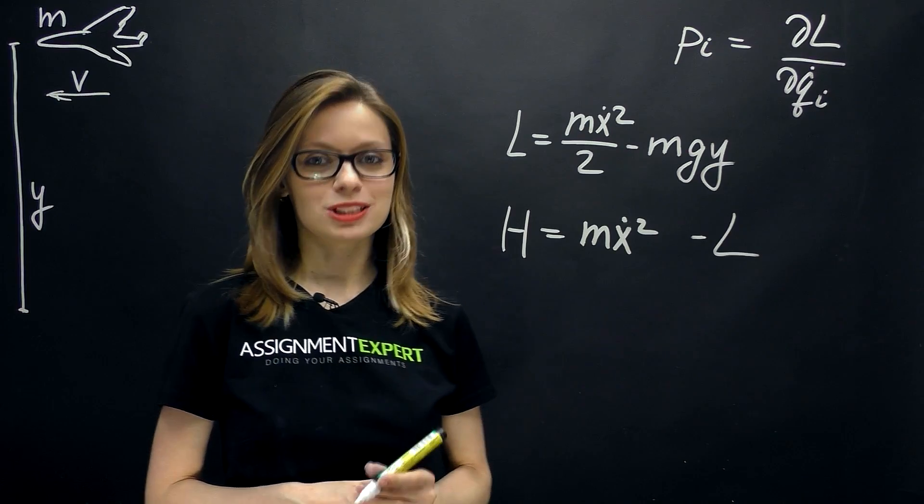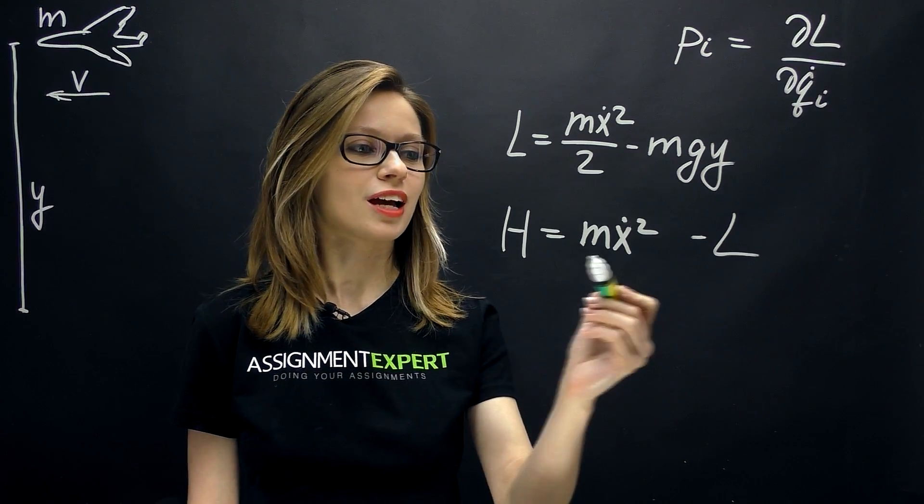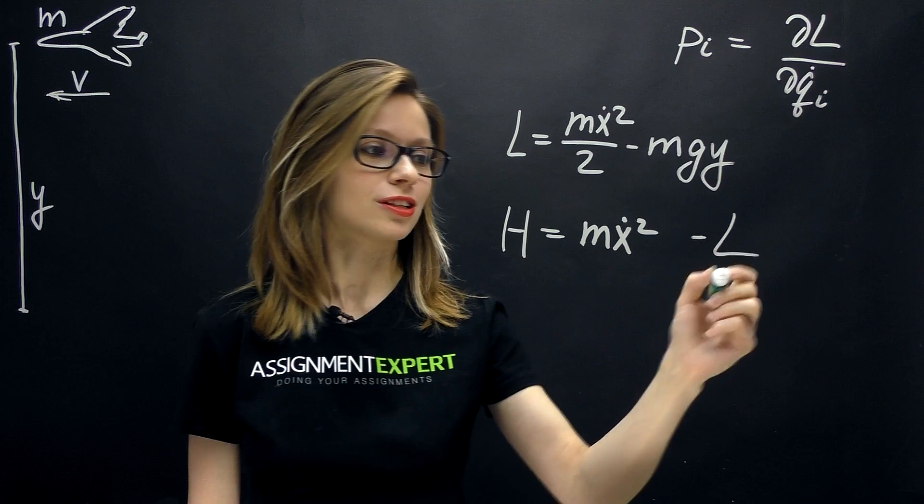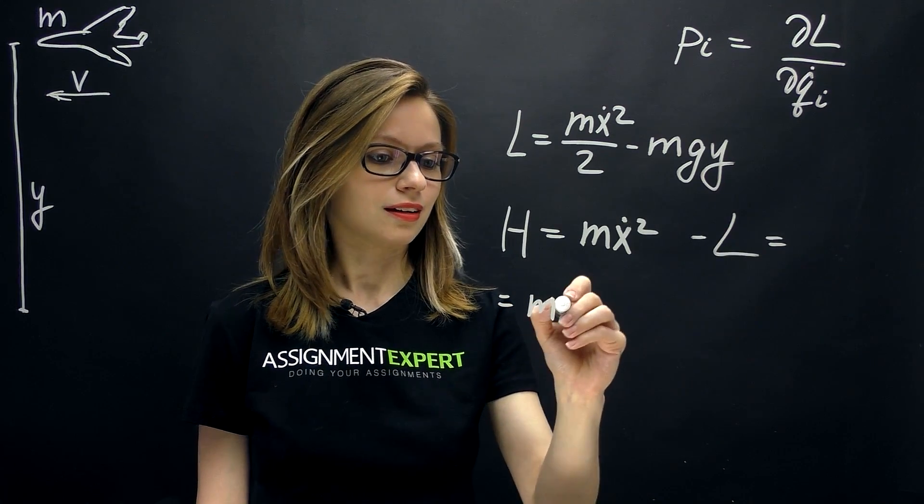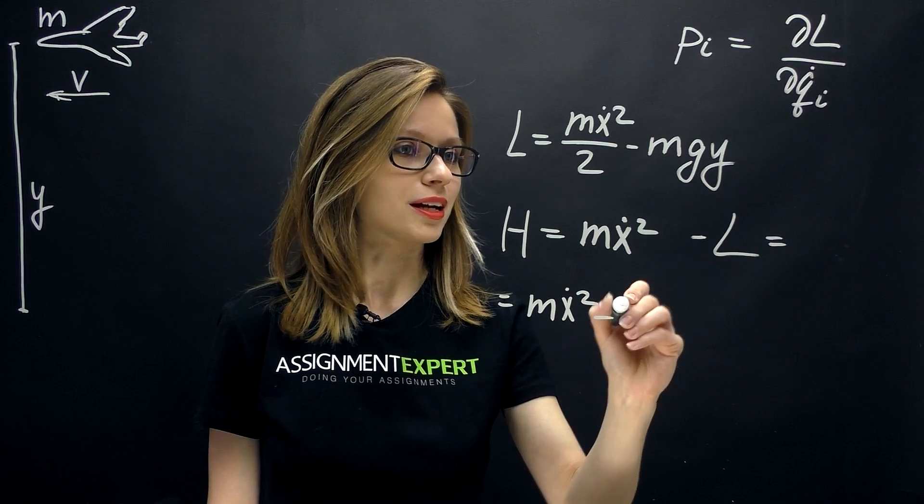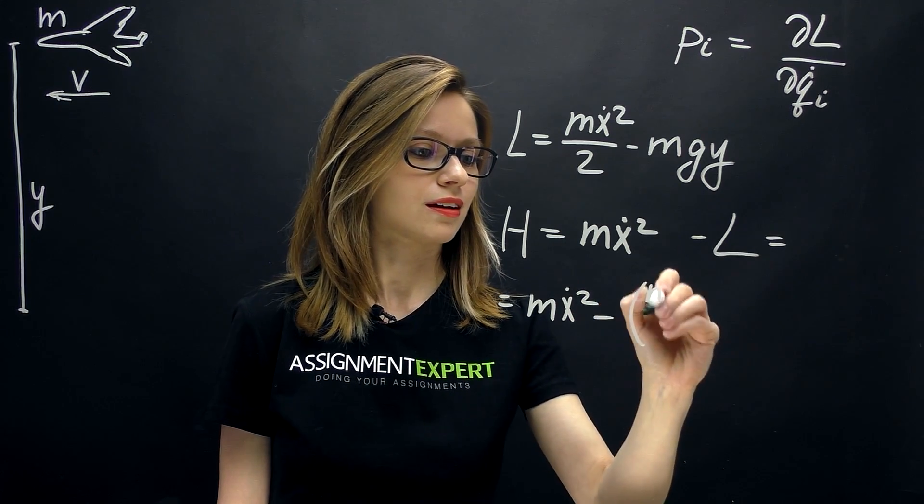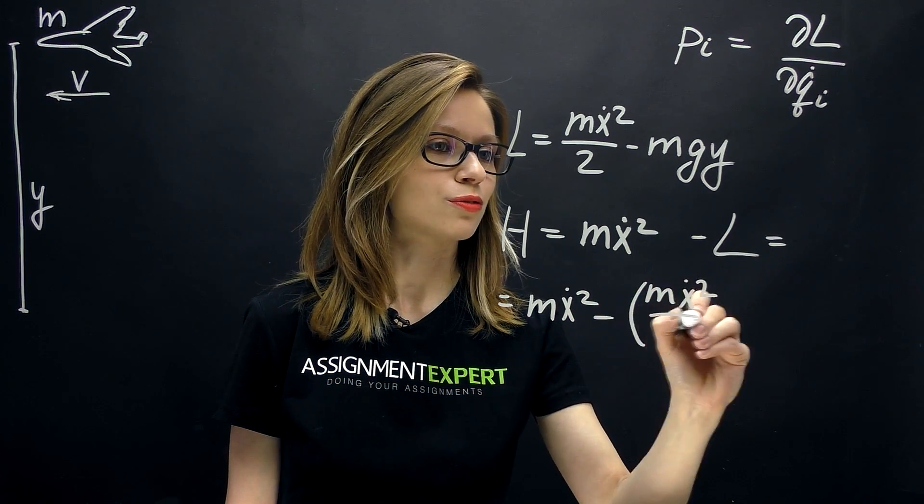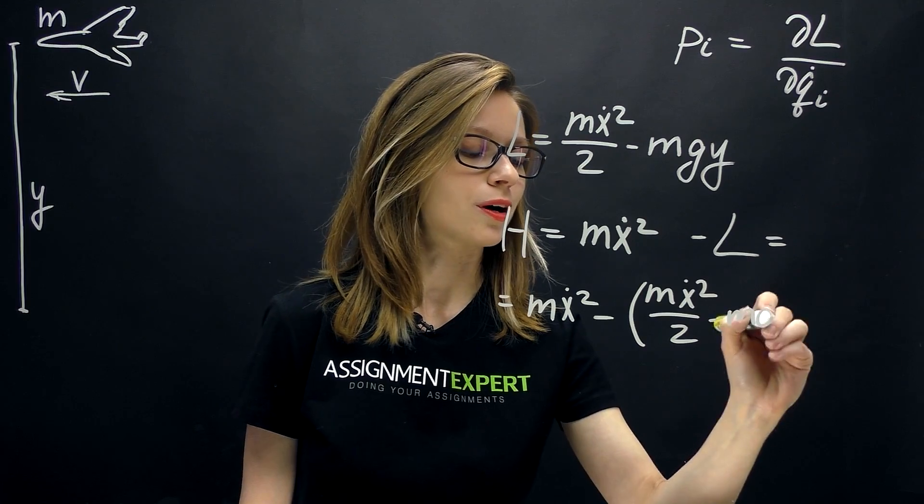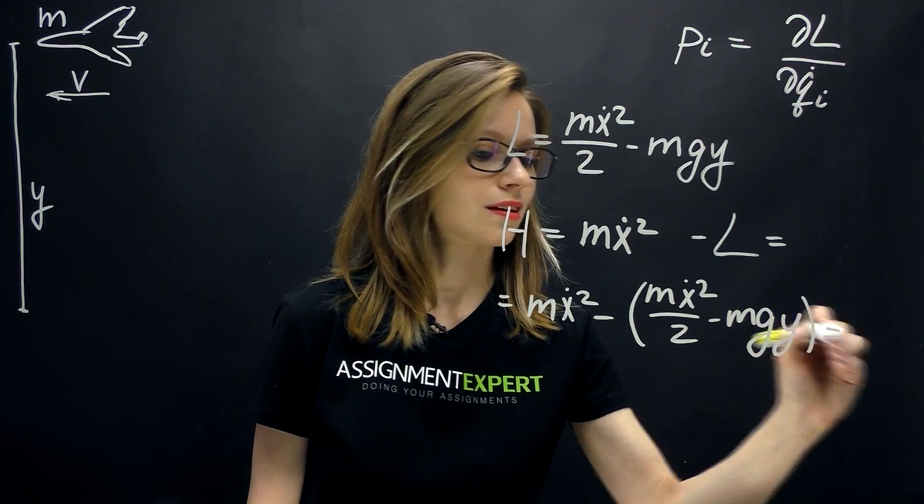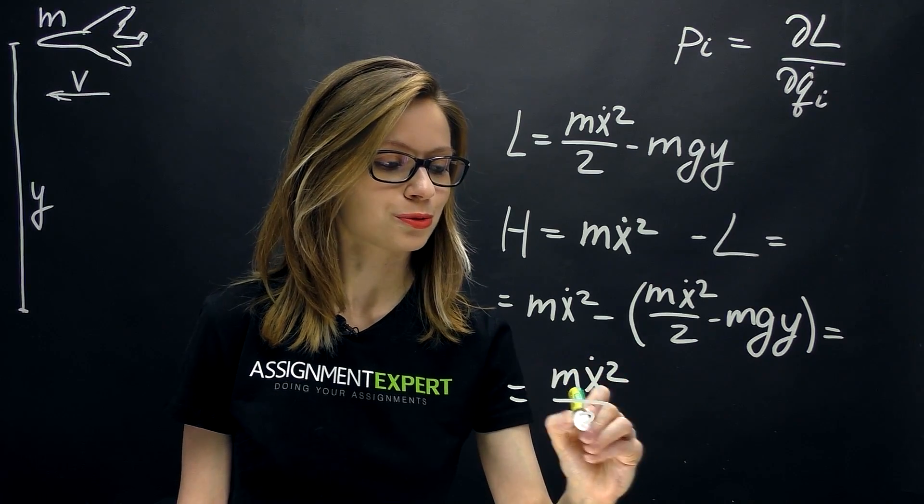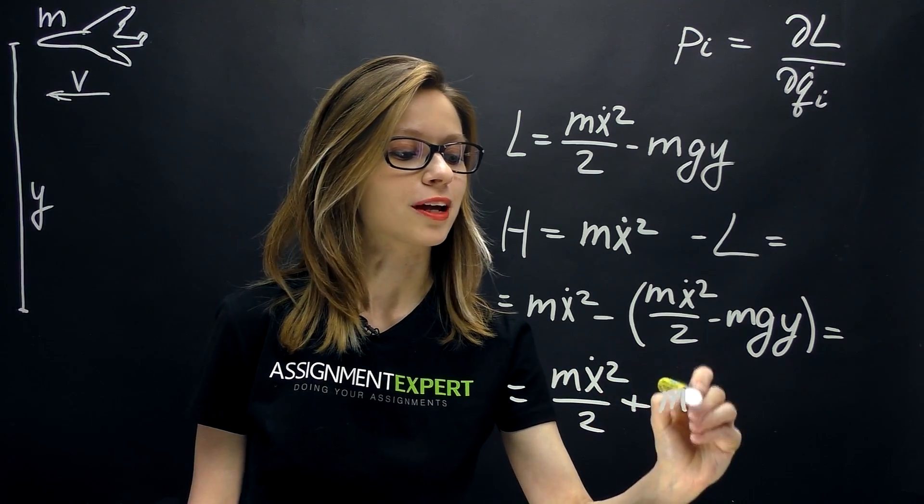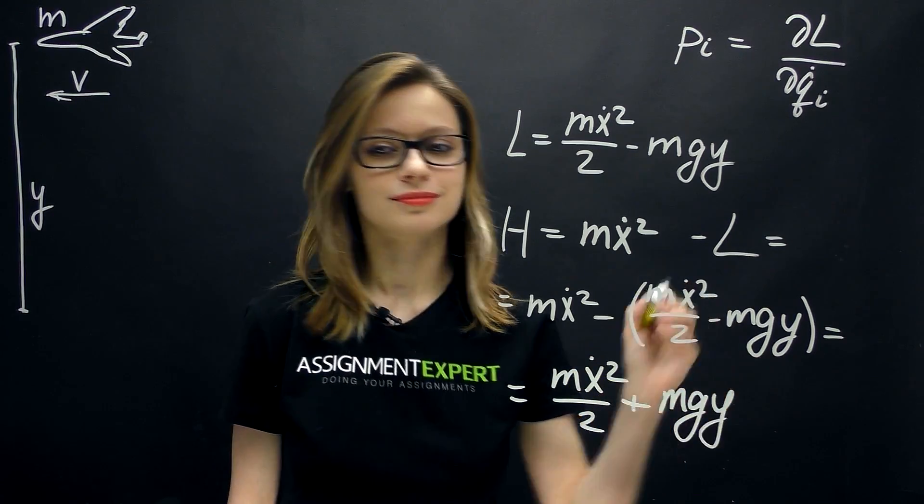Now the Hamiltonian of the system will be equal to m x dot squared minus m x dot squared over 2 minus m g y, which is equal to m x dot squared over 2 plus m g y.